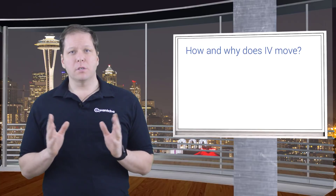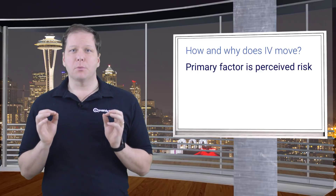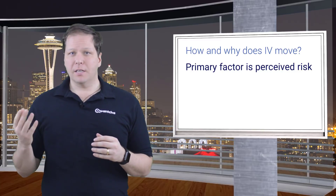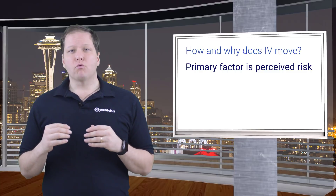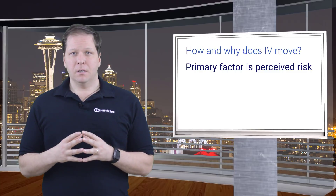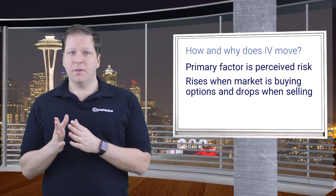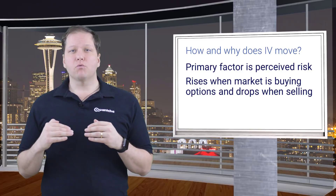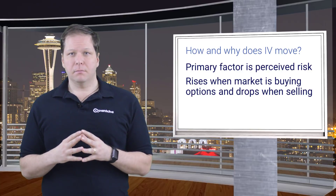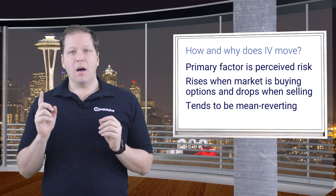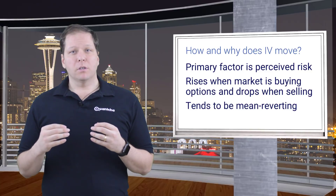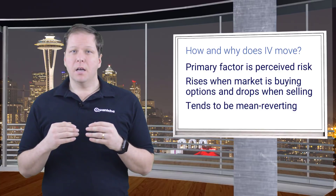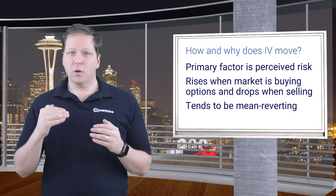The first and most important factor is a change in the perceived risk for the underlying. As major events approach, such as earnings announcements, volatility rises to account for the increase in uncertainty. Market activity, such as significant bias toward buying options, can also drive up implied volatility as the prices rise due to increased demand. However, volatility is also mean reverting. When uncertainty is cleared up, or when sellers step in to meet buyers, option prices fall, bringing volatility back to normal.